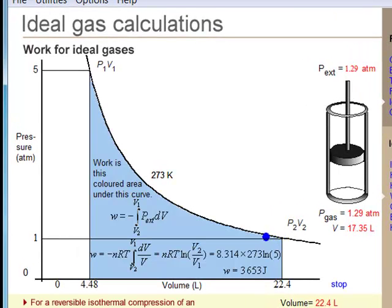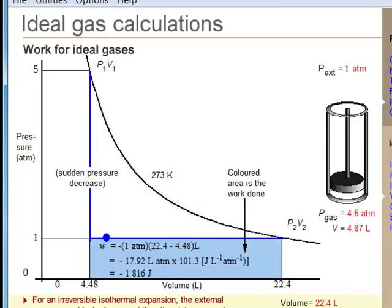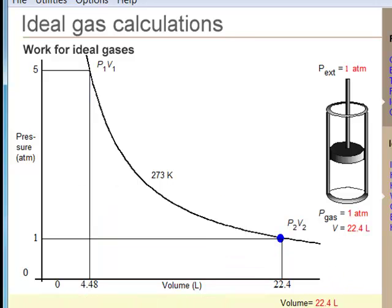For a reversible isothermal expansion and compression, the formula for work is obtained by replacing the external pressure with the gas pressure. For an irreversible expansion, the gas expands here against a constant external pressure. Less work is obtained from this path than from the reversible path.